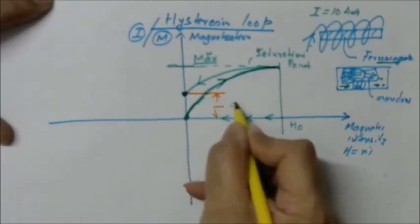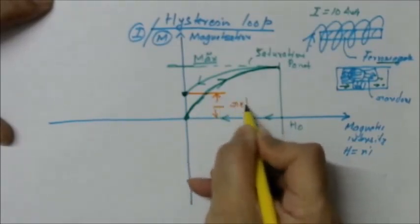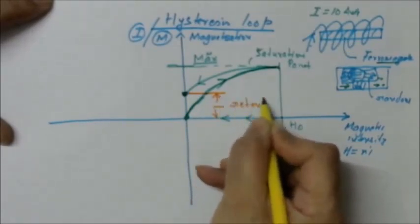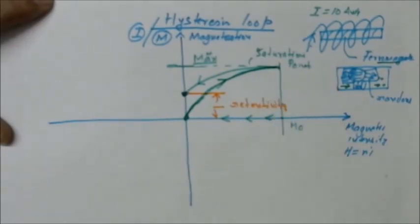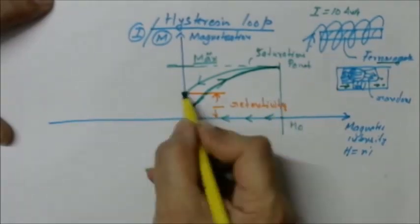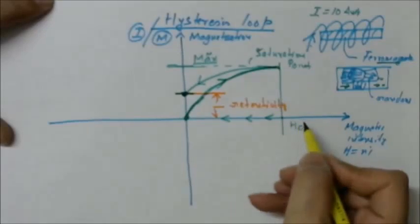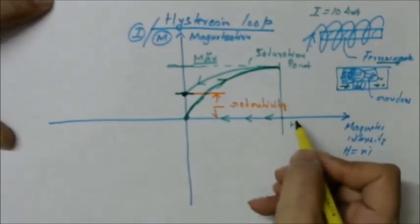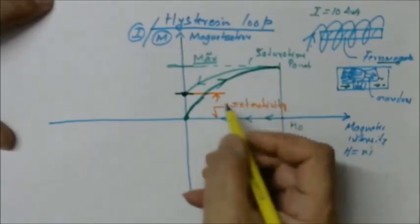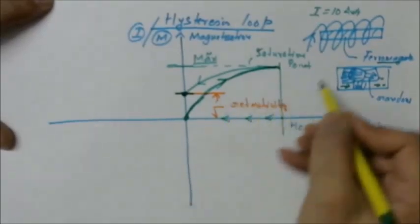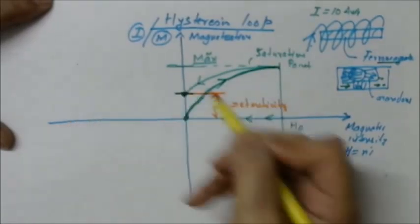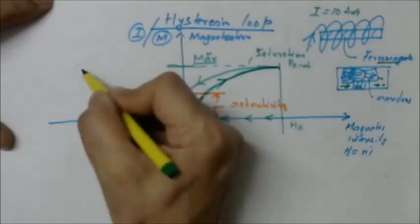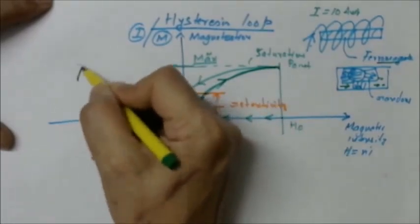This retained magnetization when the current has been brought to zero is called retentivity — the retention of magnetization after the current reaches zero.